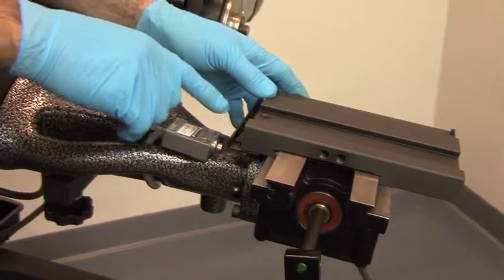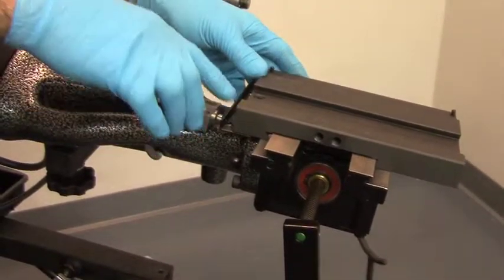Using the micro switch as a reference point, line up the GIB screws with this point to make your adjustments.